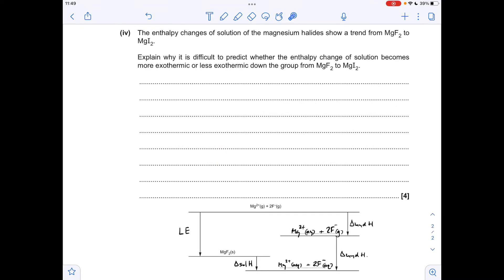So final part of the question now. You'll notice I've copied up the enthalpy cycle just to refer to, to help explain this. It's a little bit tricky, but hopefully this will make sense. We've got to think about which enthalpy changes are going to be impacted by changing the halide ion. Obviously the magnesium halides all contain magnesium ions, so therefore the hydration enthalpy won't change for the magnesium. However, the lattice enthalpy is going to change, and the hydration enthalpy for the halide ion is also going to change.